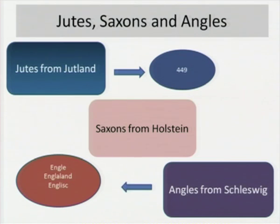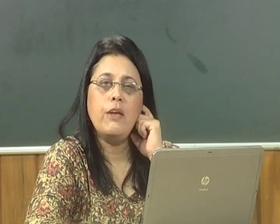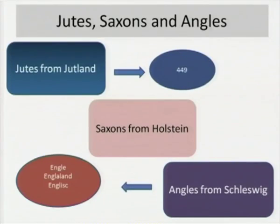Whenever we talk about the history of the English language, we need to refer to three marauding tribes from Europe — the Jutes, the Saxons and the Angles. The Jutes are supposed to have come to England from Jutland, Saxons from Holstein and Angles from Schleswig.